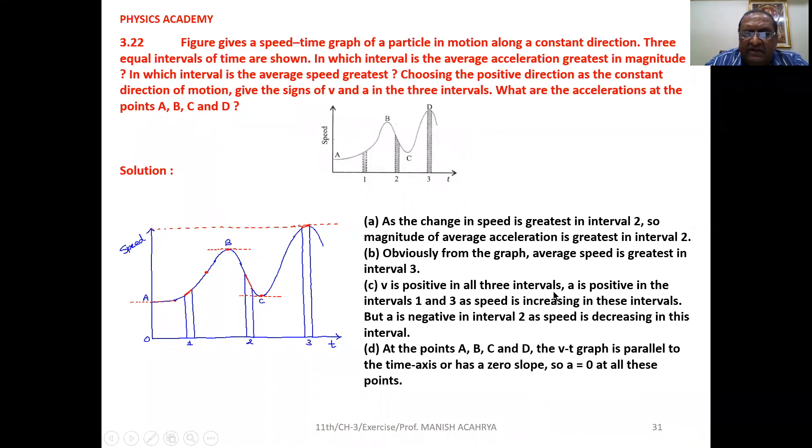v is positive in all three intervals because corresponding to all these three intervals, if we take the values of speed from the graph, all the values will be positive.